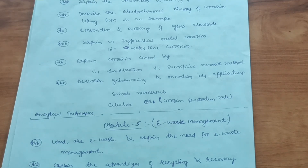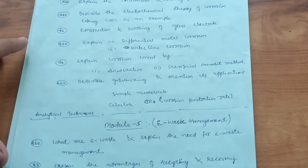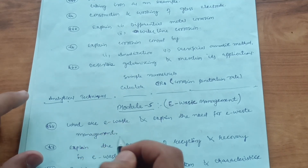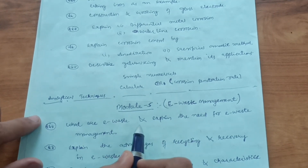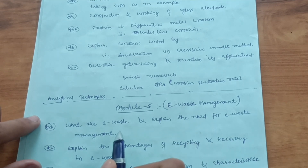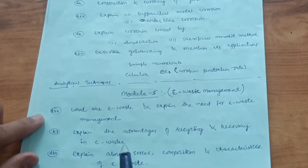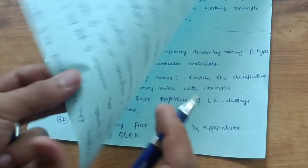If you are more comfortable in Kannada or Hindi, just understand the concepts in that language and then write it in your own words in the university examination. Module 5 is fully theoretical with very few numericals. The important questions are: What are e-wastes, and explain the need for e-waste management? Next: explain the advantages of recycling and recovery in e-waste. Then: explain the sources, composition, and characteristics of e-waste.